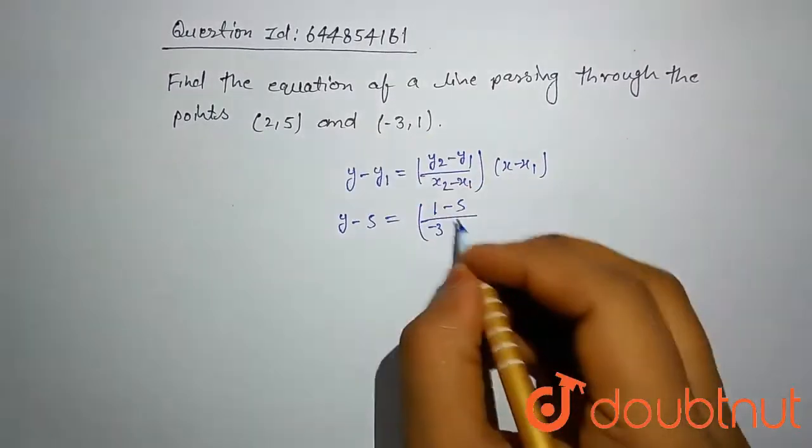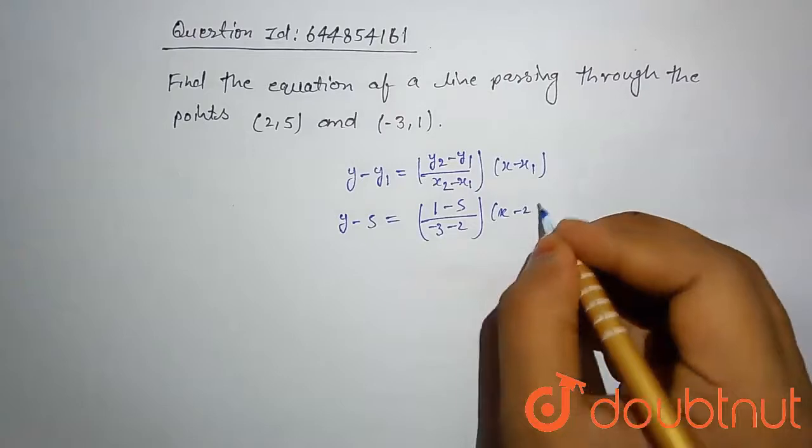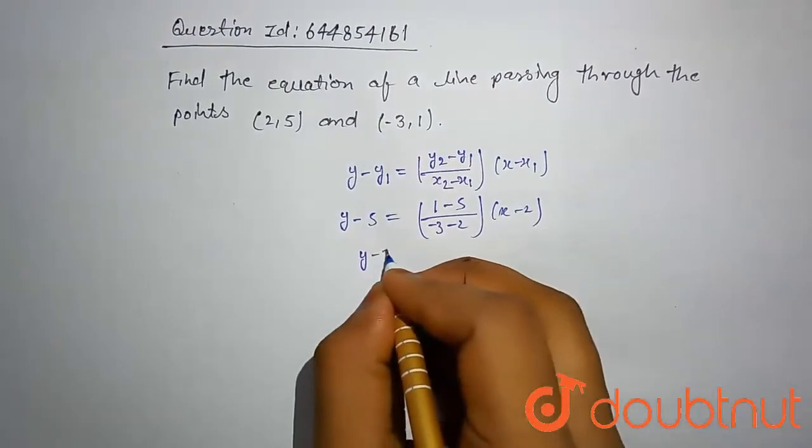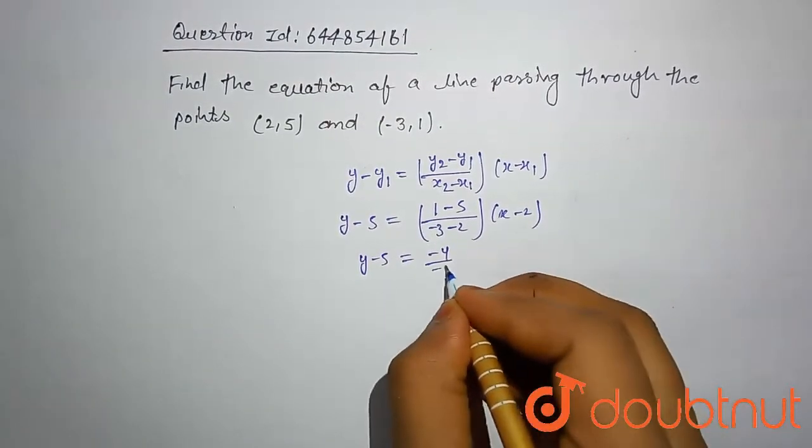This becomes y minus 5 equal to -4 divided by -5 into x minus 2.